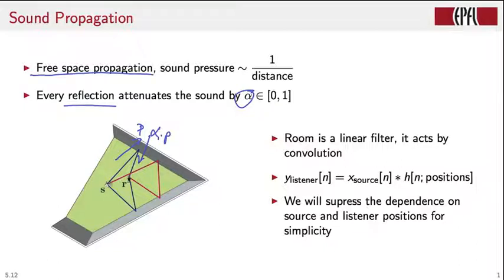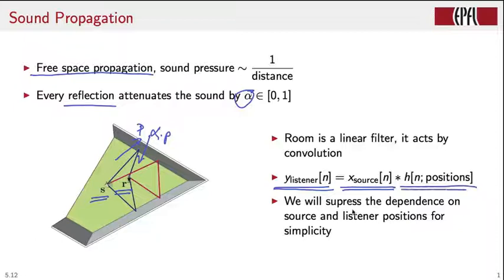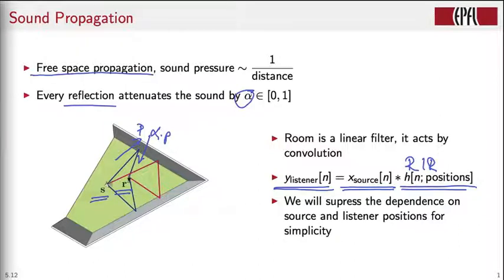It turns out we can describe the room as a linear filter. If we want to describe the system between the source of sound and a microphone, we can write what the microphone picks up as the emitted sound convolved with some impulse response corresponding to the room — we call this the room impulse response, or RIR. This is good news because it means the room is just a linear shift invariant system once we fix the locations of the source and receiver. We can use all the tools developed for LSI systems — the discrete time Fourier transform or the Z-transform — to deal with rooms.